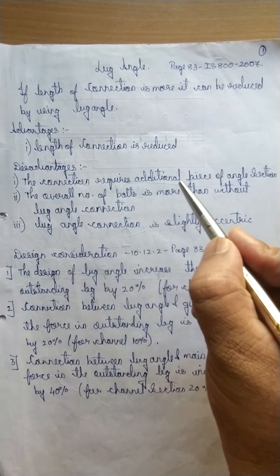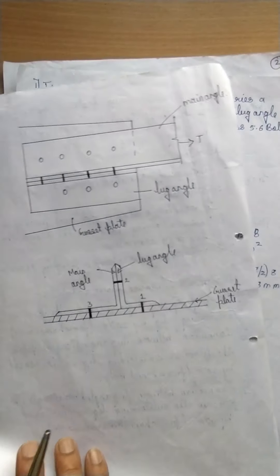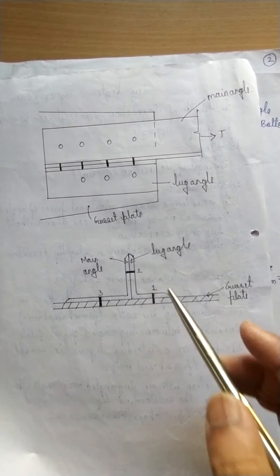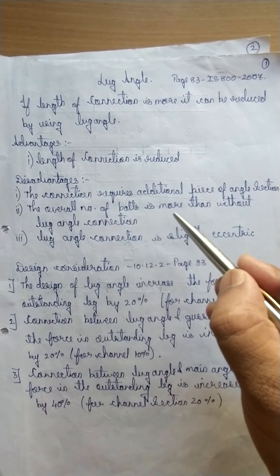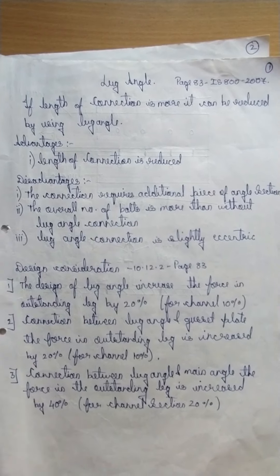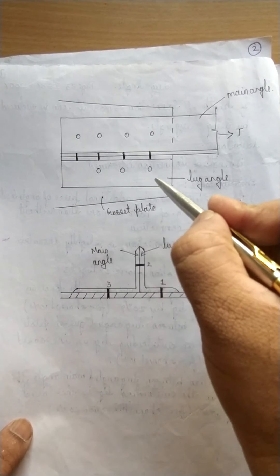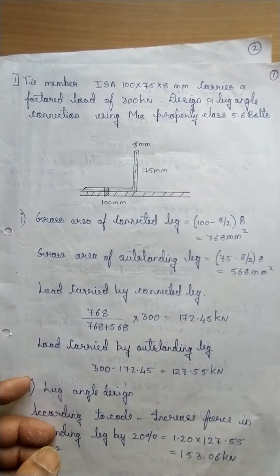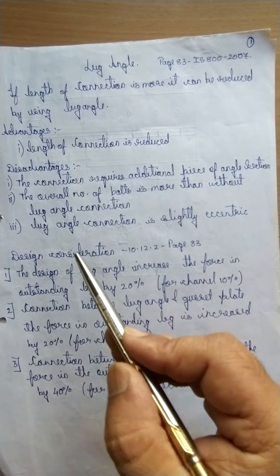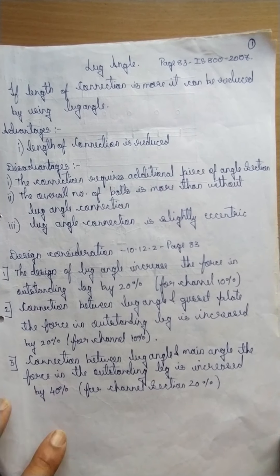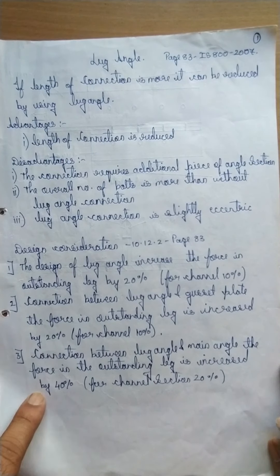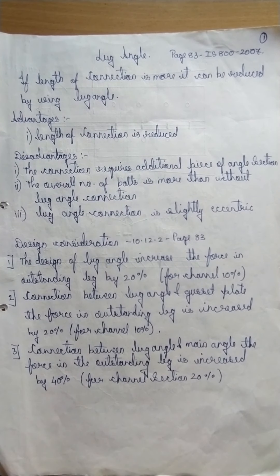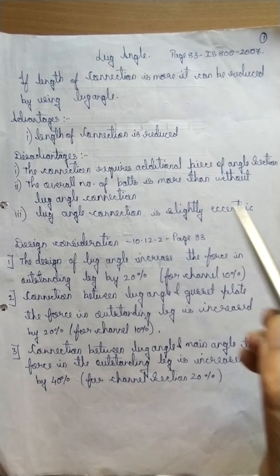Disadvantages: first, the connection requires an additional piece of angle section — we have to provide one more angle. Second, the overall number of bolts is more than without the lug angle connection, because we have to connect the lug angle to both the gusset plate and the main angle, so bolt numbers may increase. Third, the lug angle connection is slightly eccentric — the CG of the bolting system gets shifted depending on whether an equal or unequal angle is used.